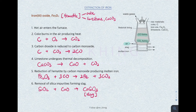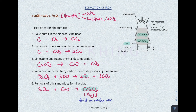If you notice, these are the two products that get removed from the furnace. How are they separated from one another? Slag always floats on molten iron because slag has a lower density compared to molten iron. Therefore, slag is always the top layer and molten iron is always the bottom layer. This is how molten iron gets separated from the waste product.